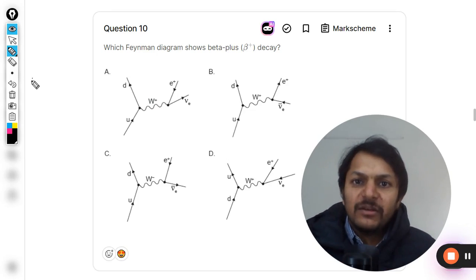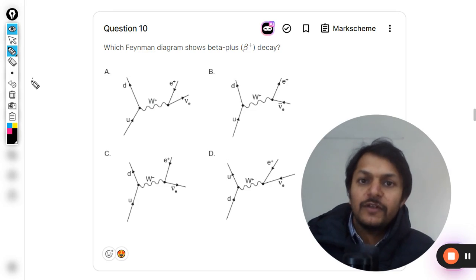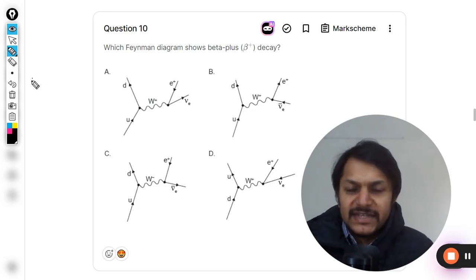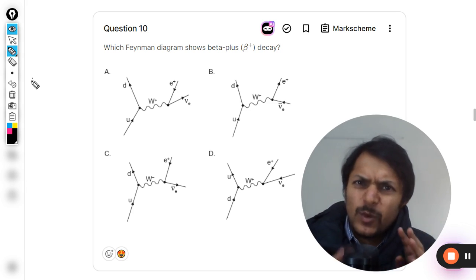This question asks which Feynman diagram shows beta plus decay. First of all, we must know what is beta plus decay and when does it happen. There are basically two reactions, one is for beta minus and another is for beta plus.